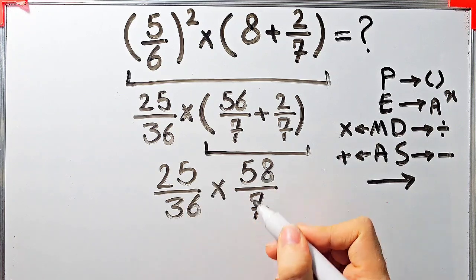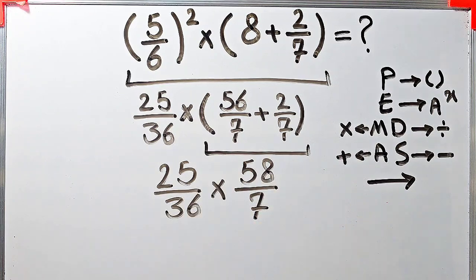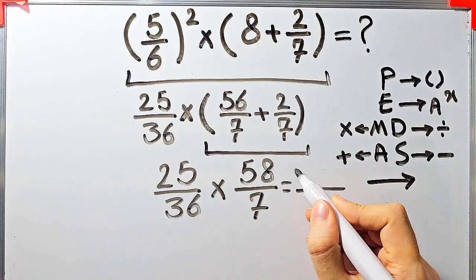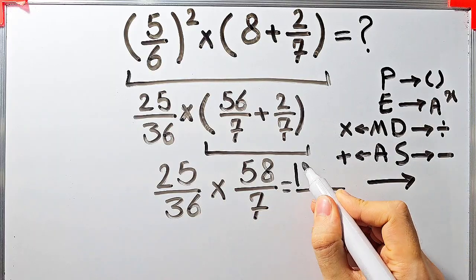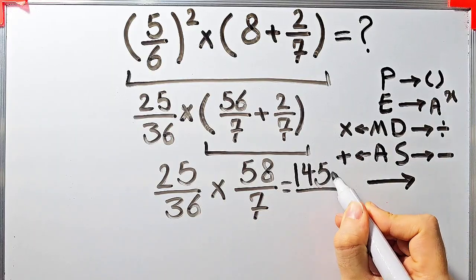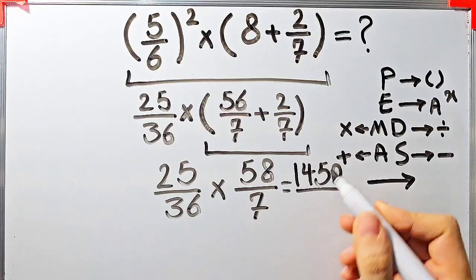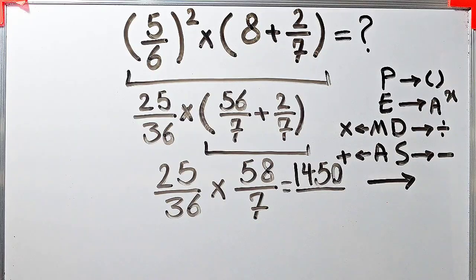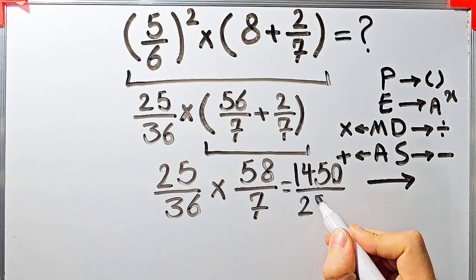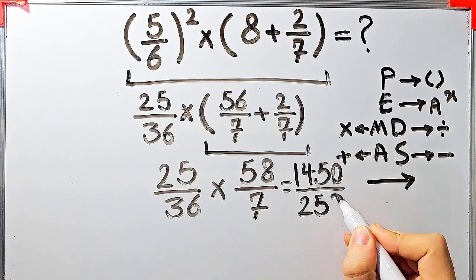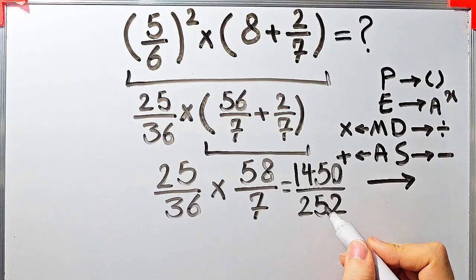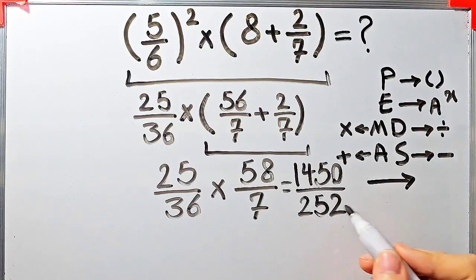25 times 58 equals 1450, and 36 times 7 equals 252. The final answer of this question equals 1450 over 252.